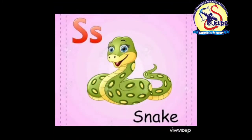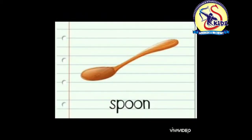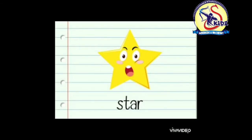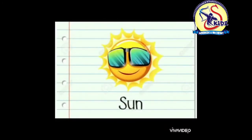Now I will show you some pictures that start from letter S. Here we go. First picture is of a snake — snake, repeat: snake. This is a snake. See the next picture, it is a spoon — spoon, repeat: spoon. This is a spoon. See the next picture, it is a star — star, repeat: star.